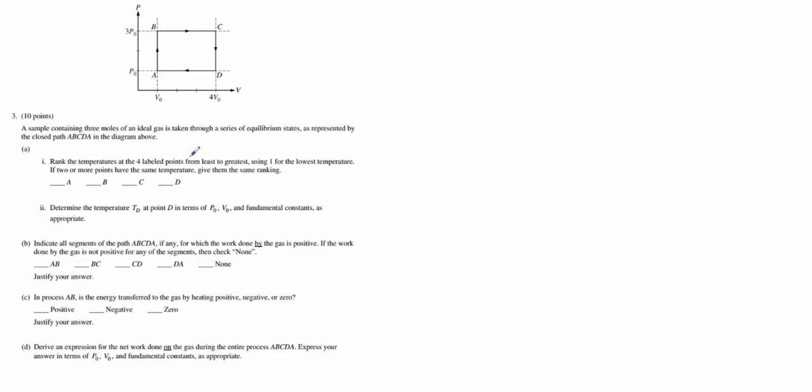A1 wants us to rank all four points from least to greatest temperature, with one being the lowest temperature. If we have two or more points at the same temperature, we're going to give them the same ranking. The best way of thinking about this is looking at your isotherm lines. It's helpful to envision a bunch of isotherms everywhere, which are these curvy spots.